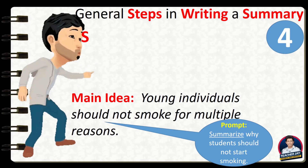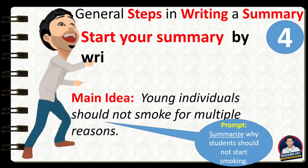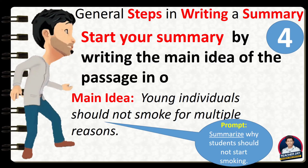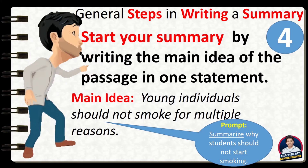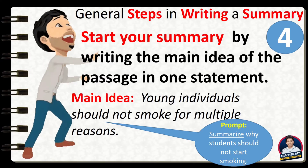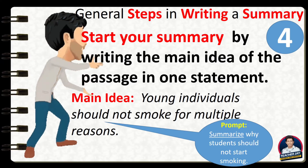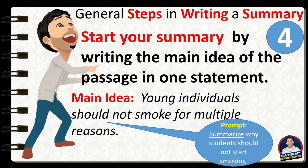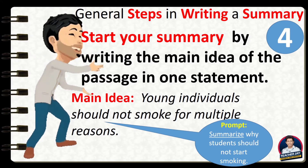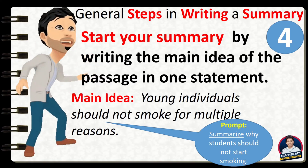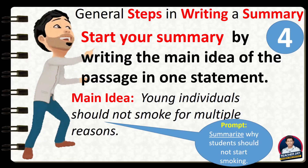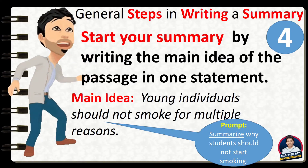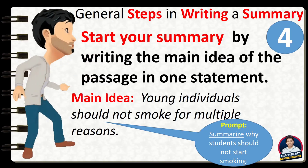Step 4: Start your summary by writing the main idea of the passage in one statement. For instance, the main idea of the given passage earlier is that young individuals should not smoke for multiple reasons. The main idea is what the entire passage is all about. You can get it by reading and understanding the text. Also, it relates to what the prompt asked.